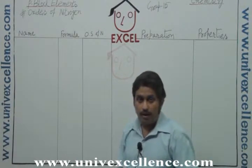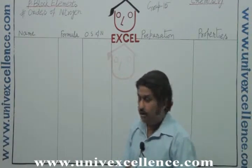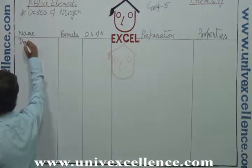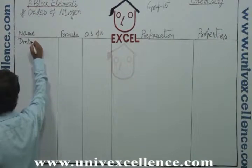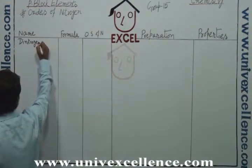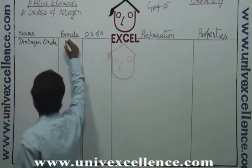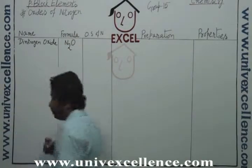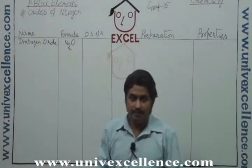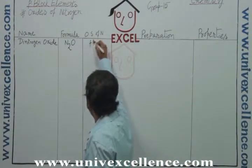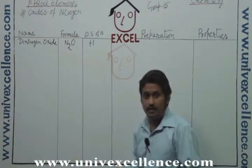Generally, nitrogen exhibits different oxidation numbers. First I will start from N2O, that is called dinitrogen oxide. The formula is N2O, the special name is laughing gas, and the oxidation state of nitrogen here is plus one.